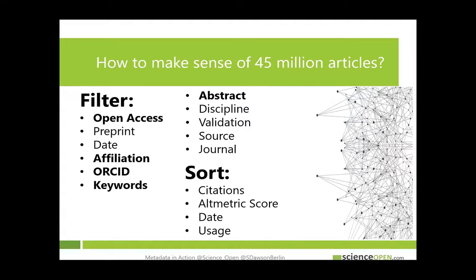How do you make sense of 45 million articles and find relevant content? On Science Open we work with a whole series of filters and sorting mechanisms. You can sort by open access, preprint, date, and search by affiliation, ORCID ID, keywords, abstract, etc. You can then sort results by altmetric score, citation number, date, and usage on the platform.